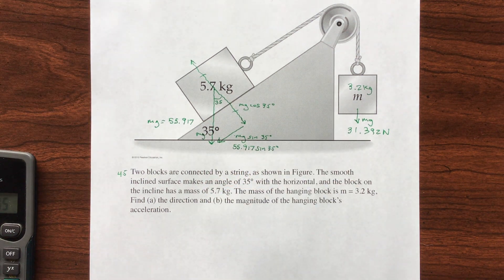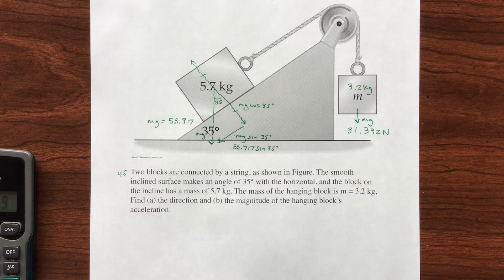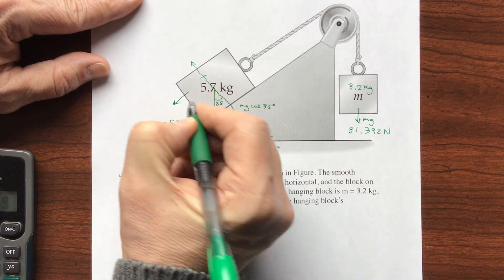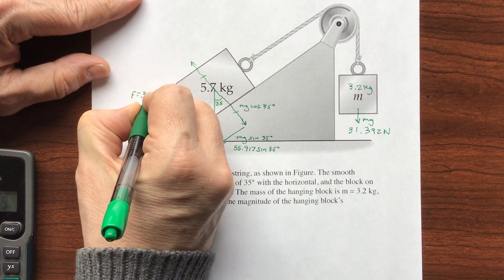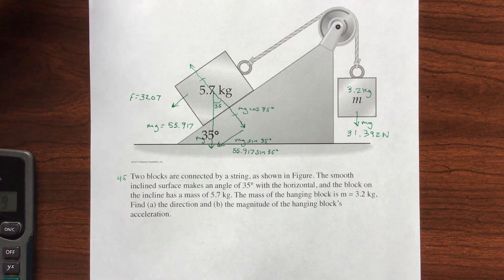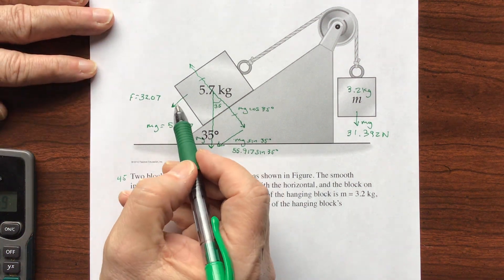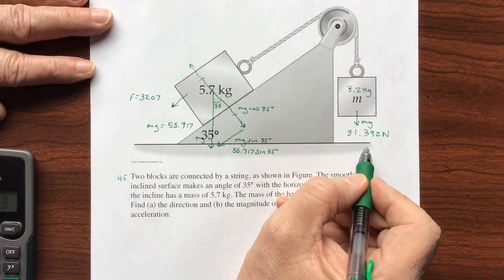So this is 55.917 times the sine of 35 degrees. So 35 sine times 55.917. So the force going down, F equals 32.07.